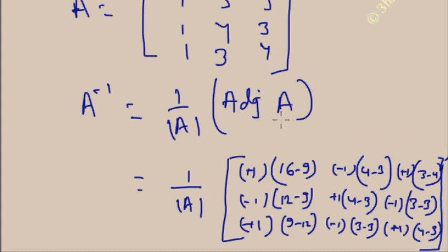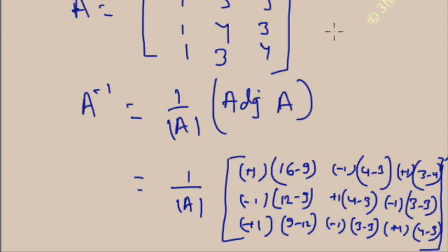To calculate the adjoint, first put the cofactors for each element. The cofactor for element 1 is plus 1 times (16 minus 9). You calculate this by removing the row and column for element 1 and finding the determinant of the remaining elements: 4×4 is 16 and 3×3 is 9, so 16 minus 9. Similarly, the cofactor for element 3 is minus 1 (since i plus j gives an odd sum), and removing the row and column gives determinant 4 minus 3. In this way all cofactors are placed, then the matrix is transposed.